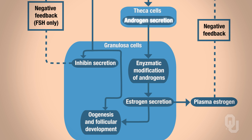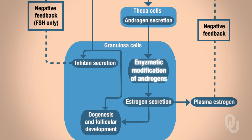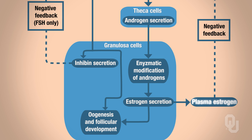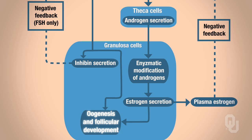The androgens synthesized and secreted by the thecal cells target the granulosa cells, which are also part of the follicle. This causes enzyme-catalyzed reactions that convert androgens to estrogen. Once we have estrogen, it goes out into the plasma. Estrogen is also responsible for causing oogenesis as well as follicular development — meaning the follicle increases in size. Those are the functions for LH.